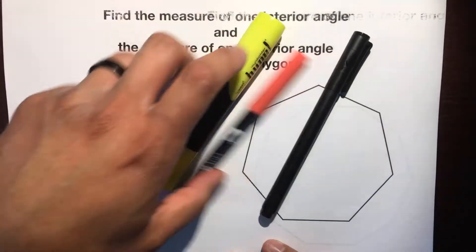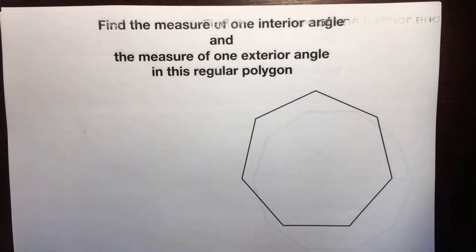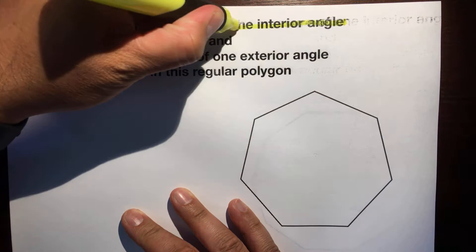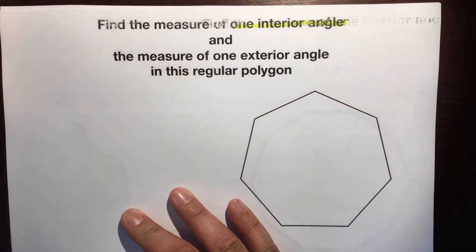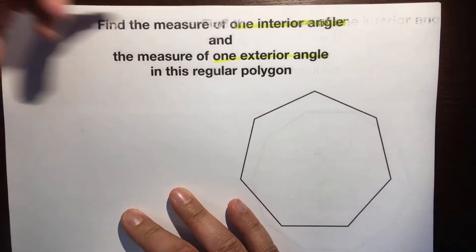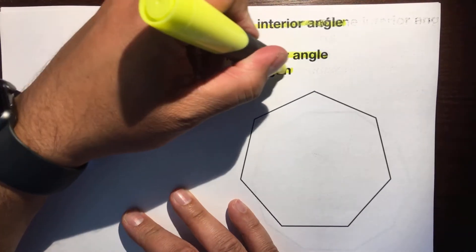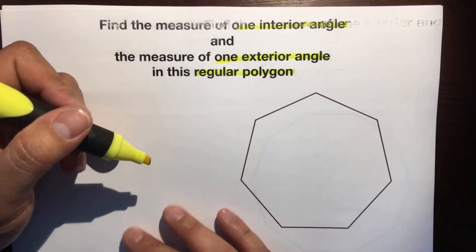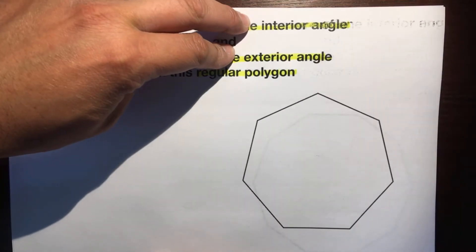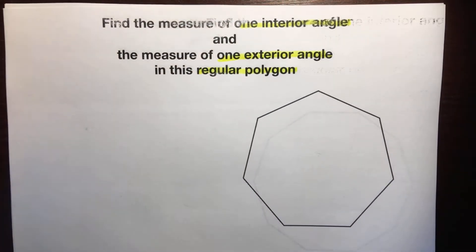Grab your highlighter first. Find the measure of one interior angle — we're going to highlight that — one exterior angle, and this is very important, in this regular polygon. So we need to find two things in this one regular polygon.